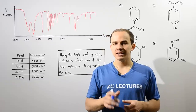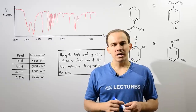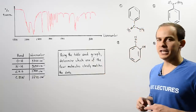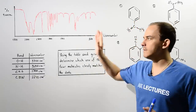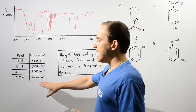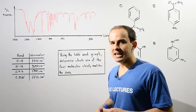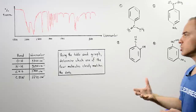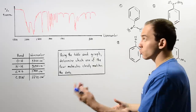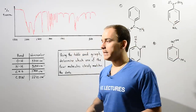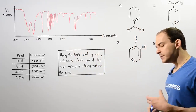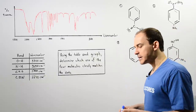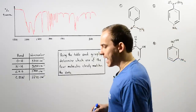Now that we discussed infrared spectroscopy, let's take a look at the following example in which we're going to use the given infrared spectroscopy graph and the following table to determine which one of these four molecules actually corresponds or closely matches the given information. Let's begin by briefly recalling how infrared spectroscopy actually works.